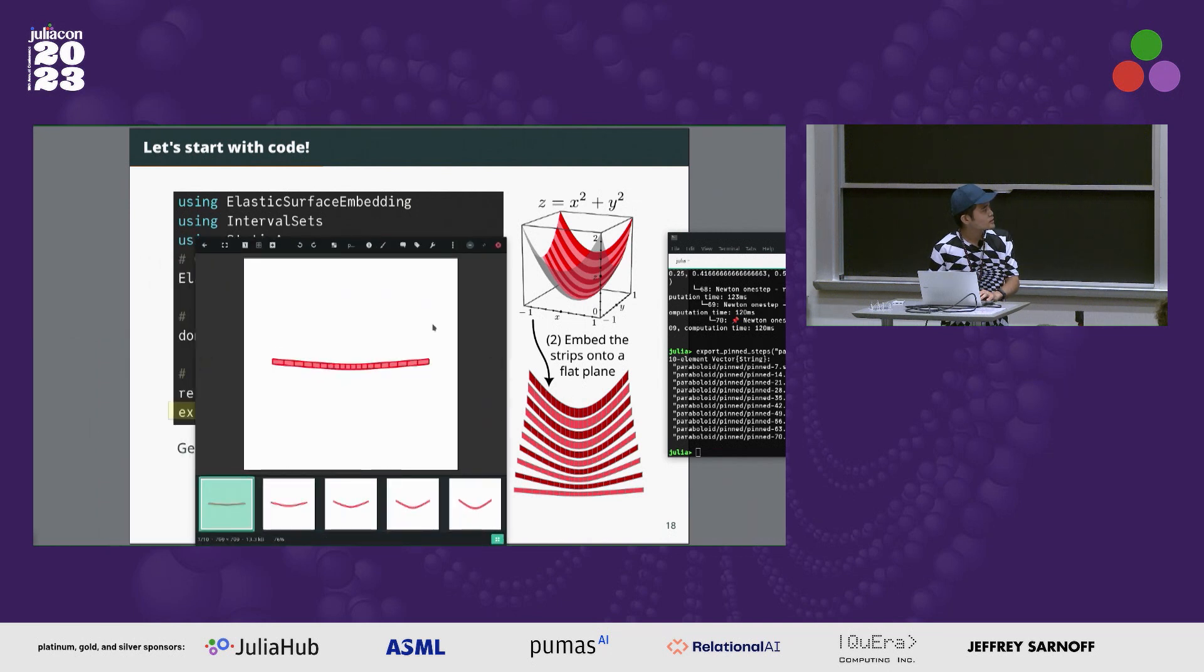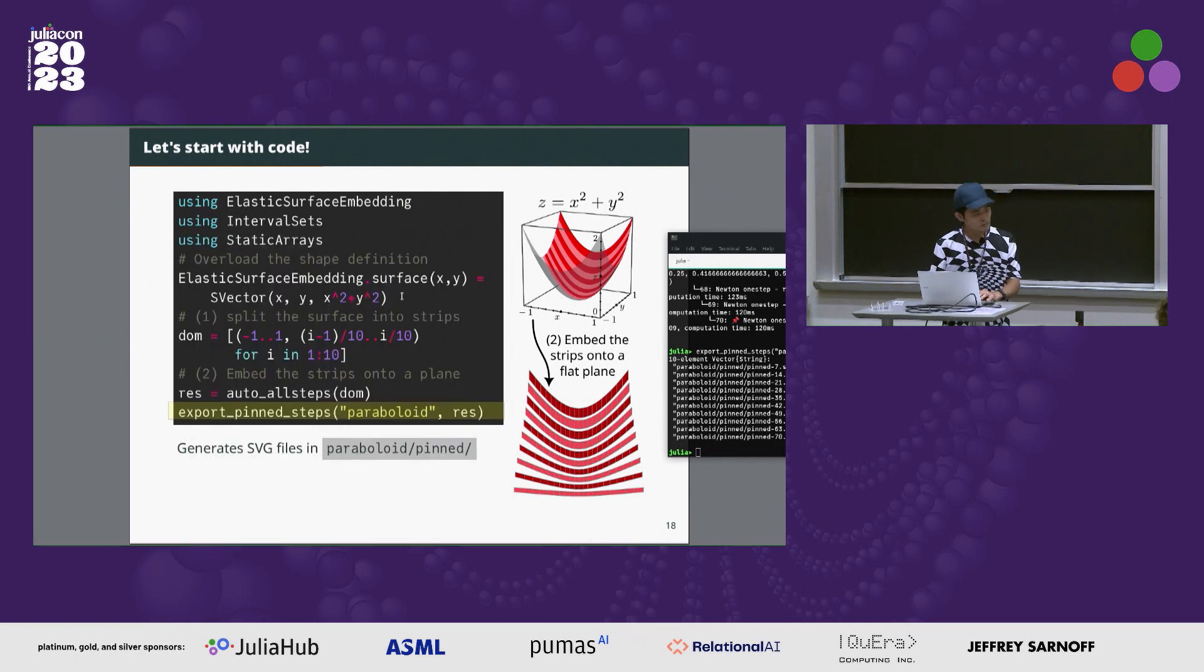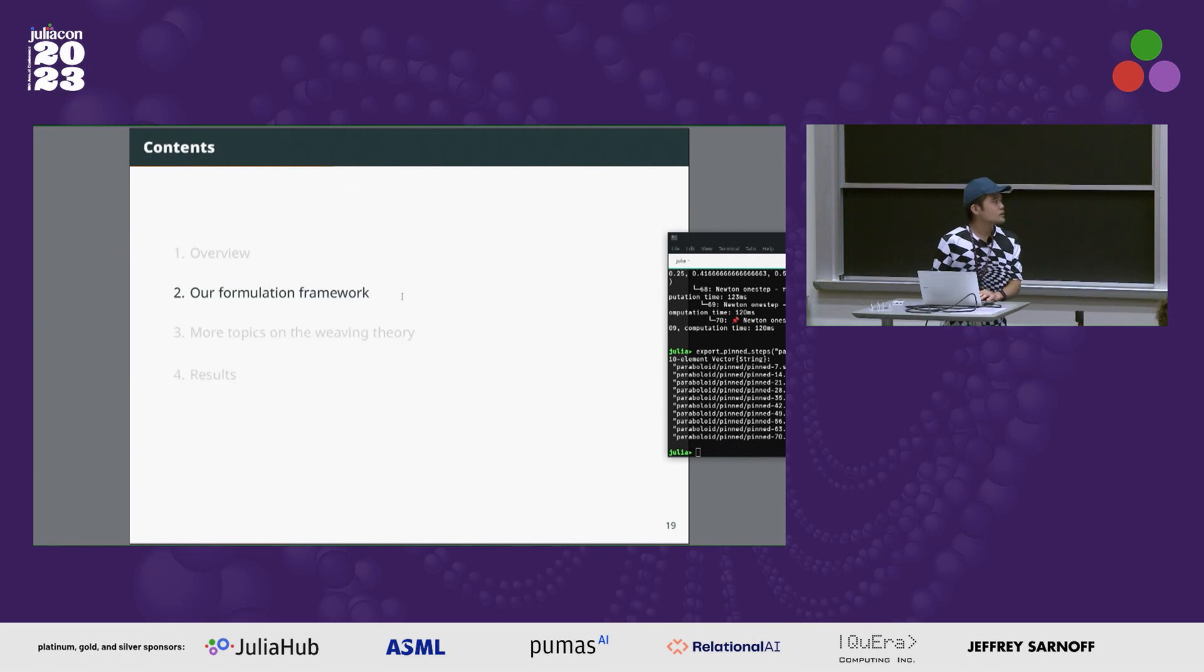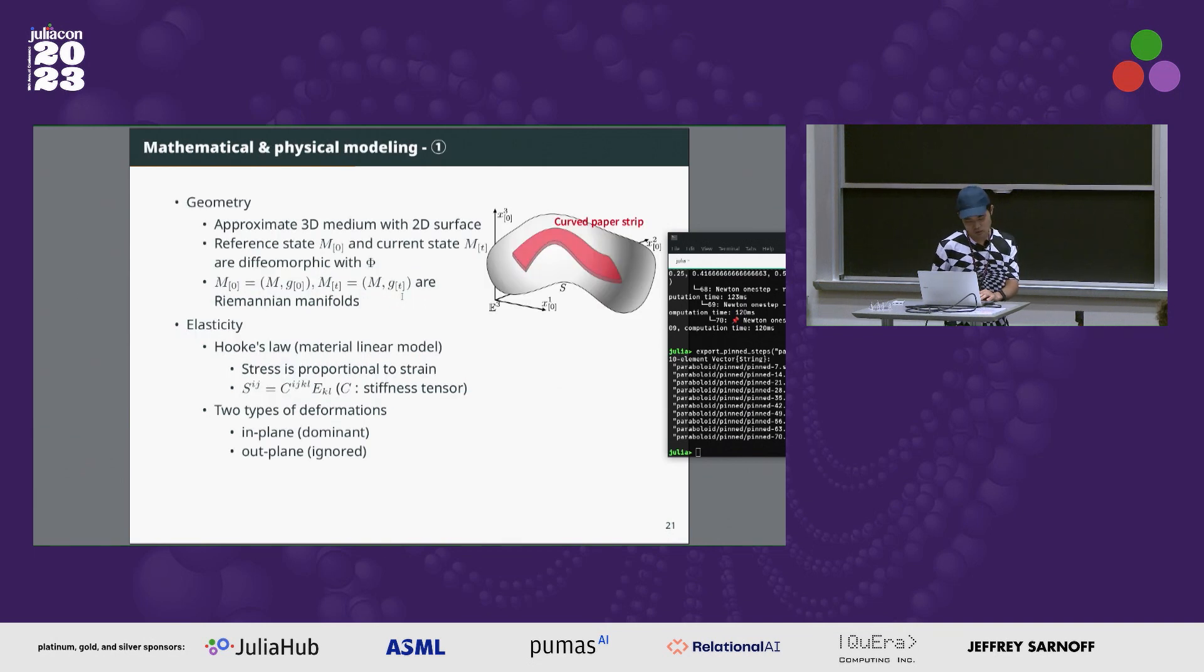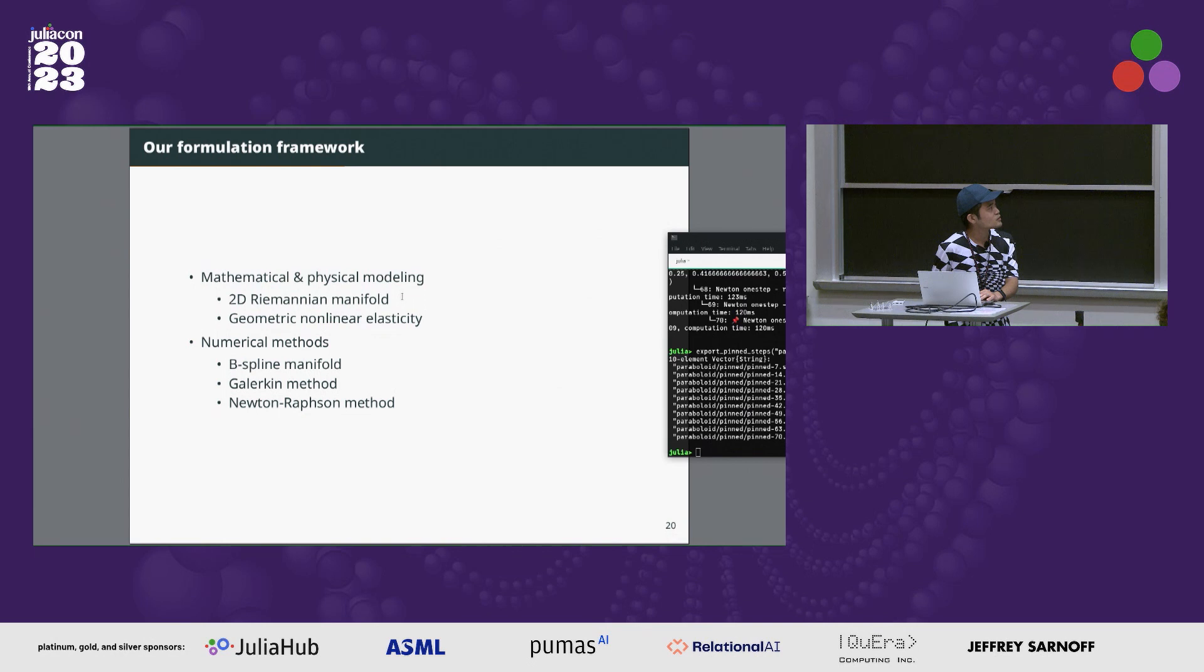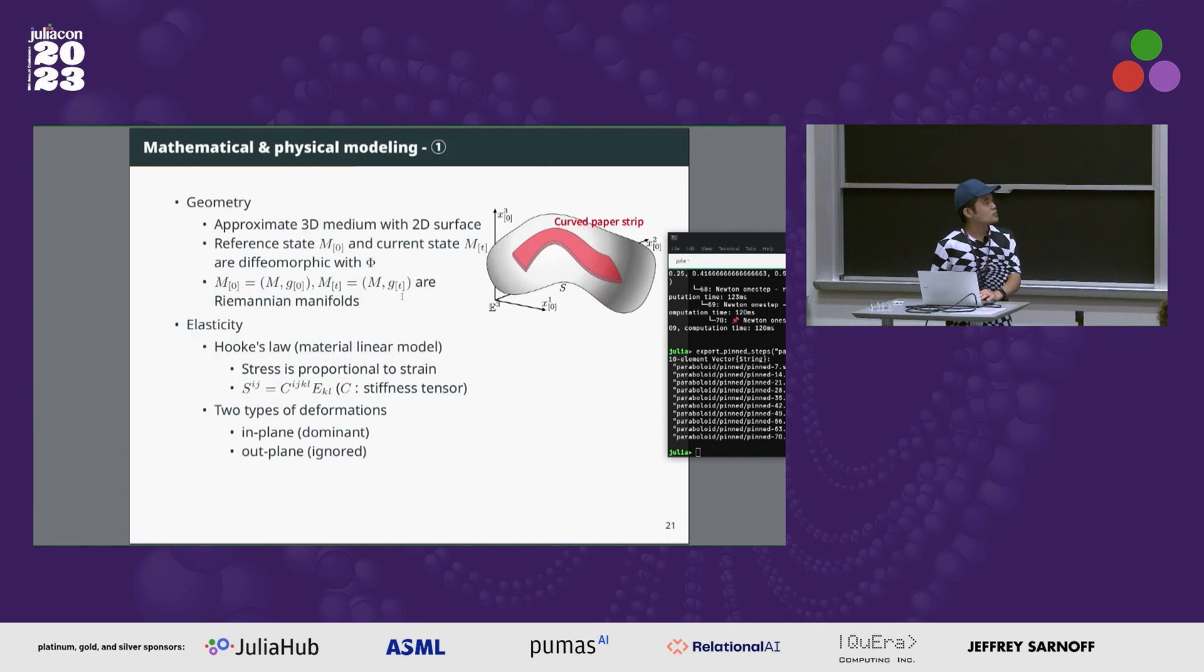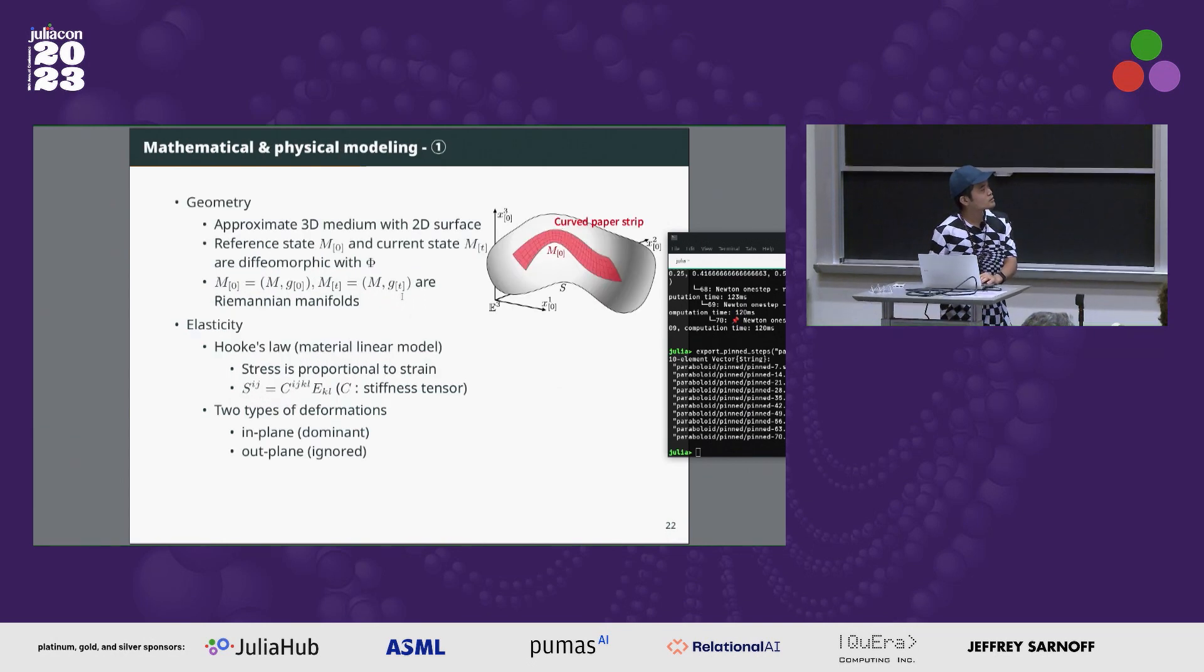Now the next section is about the formulation framework. Our framework consists of two parts: modeling part and numerical research parts. The thickness of paper material is thin, so the 3D medium can be approximated to the surface. This strip is called reference state M0, and the embedded shape is called current state Mt. The mapping is denoted phi.